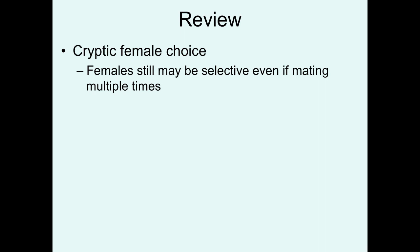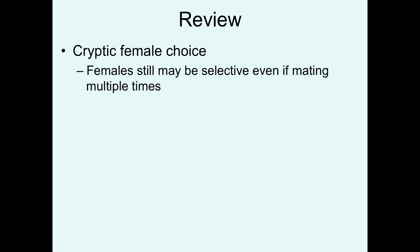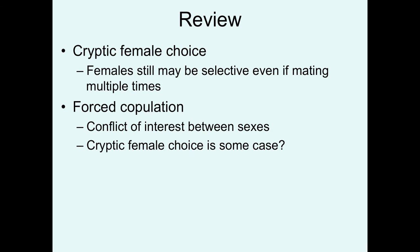Then we talked about cryptic female choice — situations where females are being selective, but it doesn't appear that they are by just looking at the mating patterns. Females may mate with multiple males but still be relatively selective in whose sperm they use to fertilize their eggs. We also talked about forced copulations and how there's a conflict of interest between the sexes — males are trying to go after quantity most of the time, females are going after quality, but low-quality males may attempt to force themselves onto females. And in some of these situations, it can be difficult to disentangle forced copulations versus cryptic female choice.